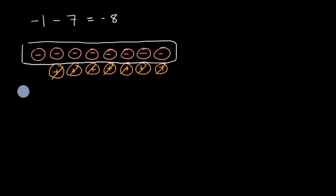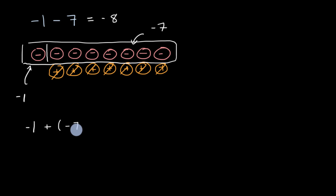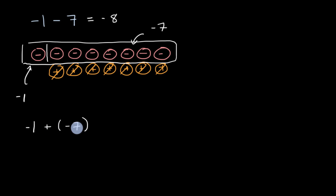Now that's interesting by itself, but you might notice something. What I have left over when I take negative one and subtract positive seven from that, I'm left with essentially the equivalent of negative one and negative seven. So another way of writing what we have left over here is negative one plus negative seven. You could view this as the same thing as negative one plus negative seven. And so this makes us think about something — is it true that if I subtract a positive, that's the same thing as adding the inverse of that positive? In the case of subtracting a positive seven, that's going to be the same thing as adding a negative seven.